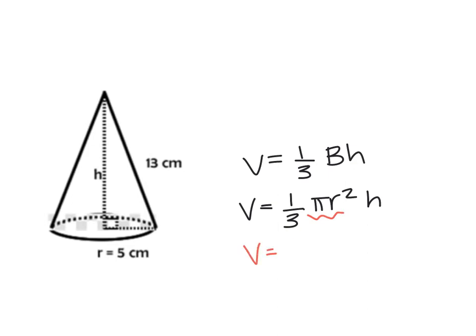But here's the issue. I don't know my height. So what I'm going to do is use Pythagorean theorem to find my height, because this just becomes a right triangle.